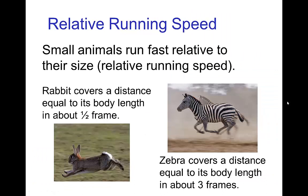Although the absolute speed in terms of miles per hour is similar for all these animals, the relative speed, that is how much time it takes for them to cover distance equal to the length of their body, small animals run fast relative to their size. A rabbit covers a distance equal to its body length in about half a frame, whereas a zebra covers the distance equal to its body length in about three frames. When we're watching something running, that gives us a sense of the size of the animal.